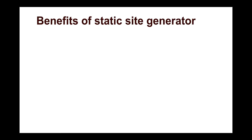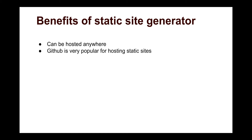Let us discuss some benefits of Static Site Generators like Hugo or Jekyll. First, as mentioned earlier, they can be hosted anywhere because they are just HTML files. You can host your static site on GitHub using GitHub Pages, which is very popular and is actually based on Jekyll. You can also use Netlify to host your static site — I have made a video showing how to deploy a site built with Hugo on Netlify.